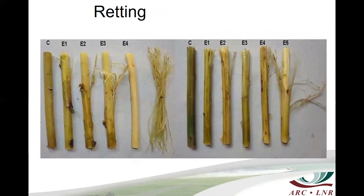Here is a photo on the left hand side of Kenaf stems and on the right hand side of Sanhennep stems. The C in each case stands for control. E1, 2, 3 and 4 are the enzyme dosages — 100, 200, 300, 400 and 500 units of enzyme dose. You can see that with an increase in enzyme dosage, the fiber separates much easier from the stem than at lower dosages.